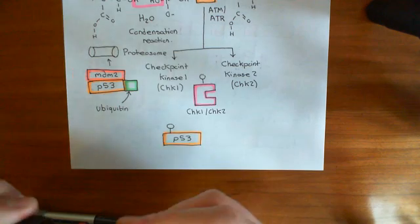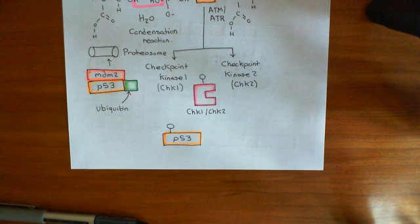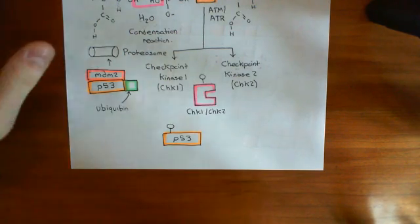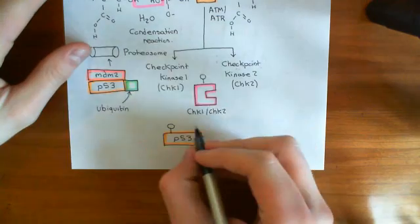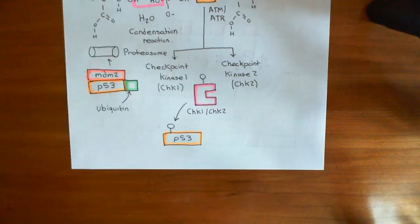So MDM2 can't bind to it anymore, which means that the P53 isn't going to be inhibited by MDM2 binding. In addition, if MDM2 is not there, it doesn't get targeted for ubiquitination, and then it doesn't get destroyed by the proteasome. So phosphorylating this P53 means that it actually survives, it's created, and it actually survives. It isn't instantly descended upon by this MDM2 protein and then destroyed. Instead, it gets to survive. So this is the way in which the checkpoint kinase 1 slash checkpoint kinase 2 activates P53.